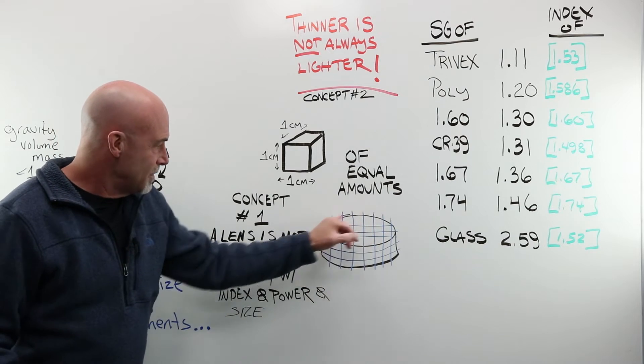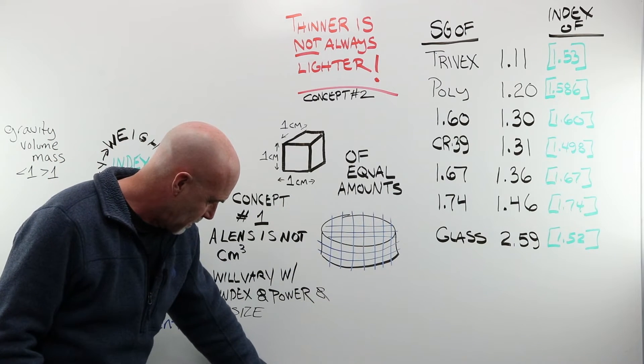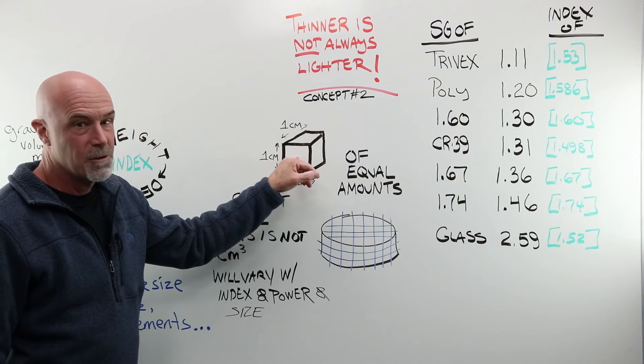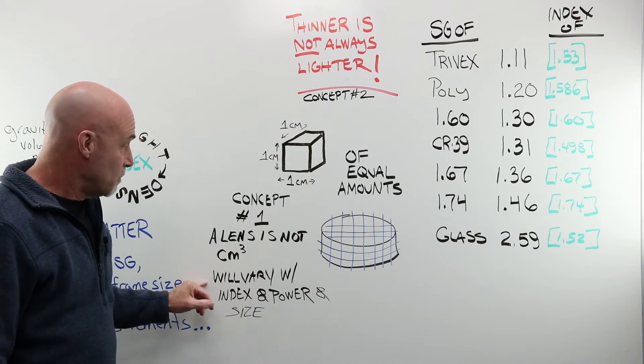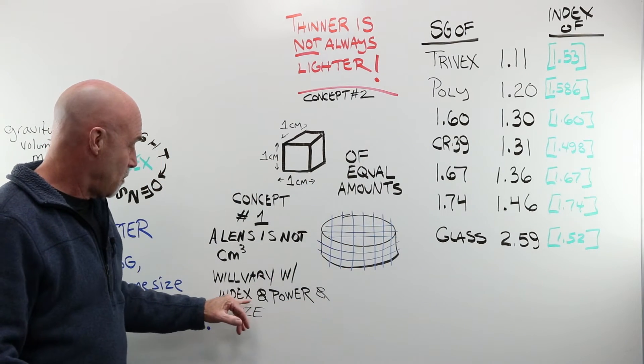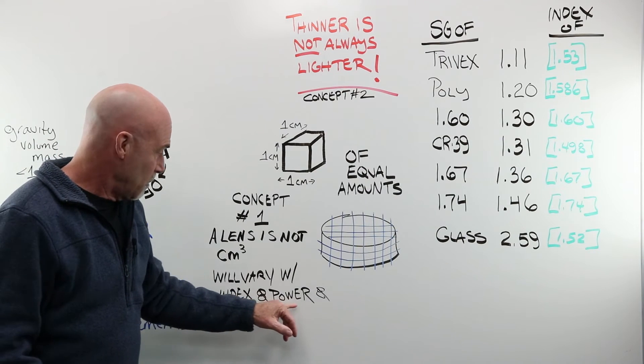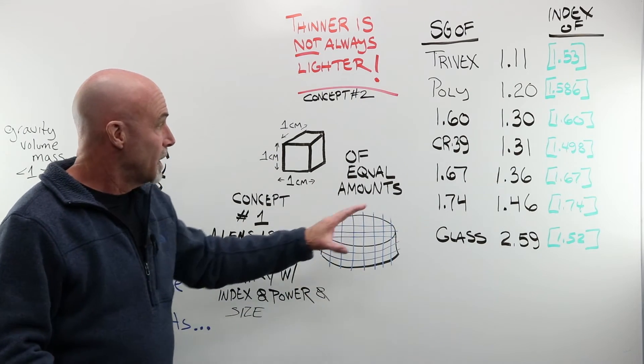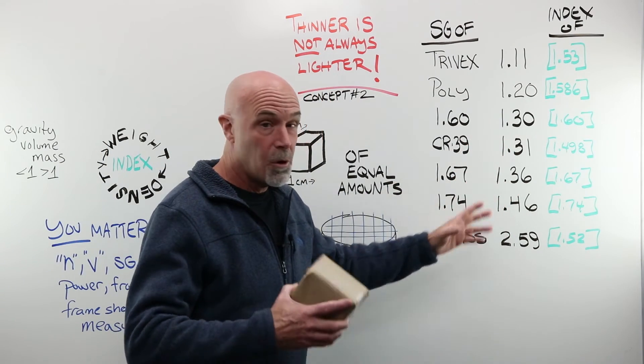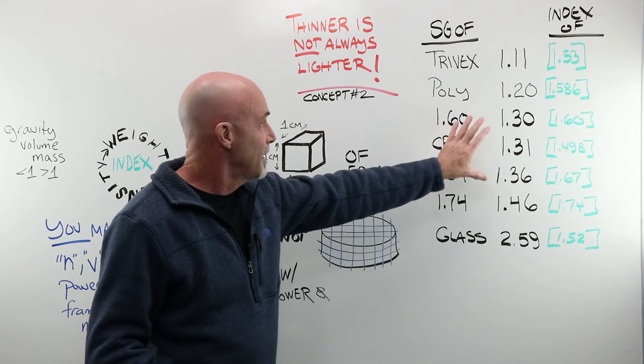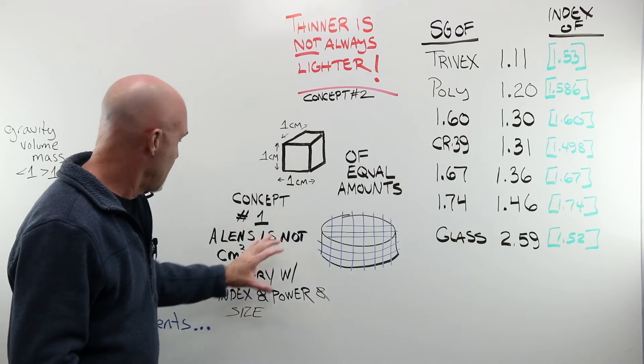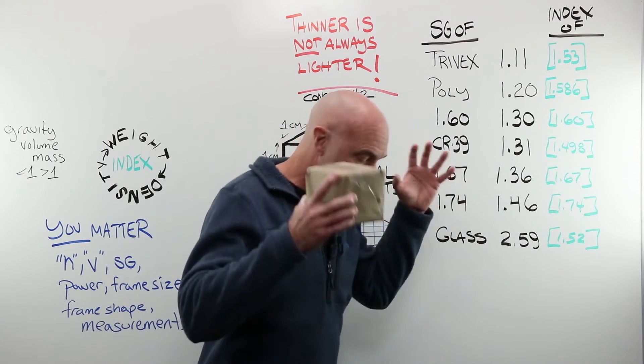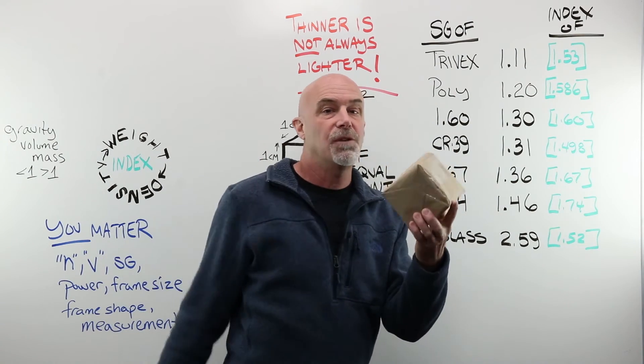Concept number one is that a lens is not a beautiful perfect cubic centimeter. It will vary, obviously, as you know, by its index of material, of its power requirements, and its size. So you cannot make generalizations. You cannot toss around terms saying that there's any relationship between these numbers and the particular weight or density or specific gravity of a lens. You're only talking about material in this specific amount.